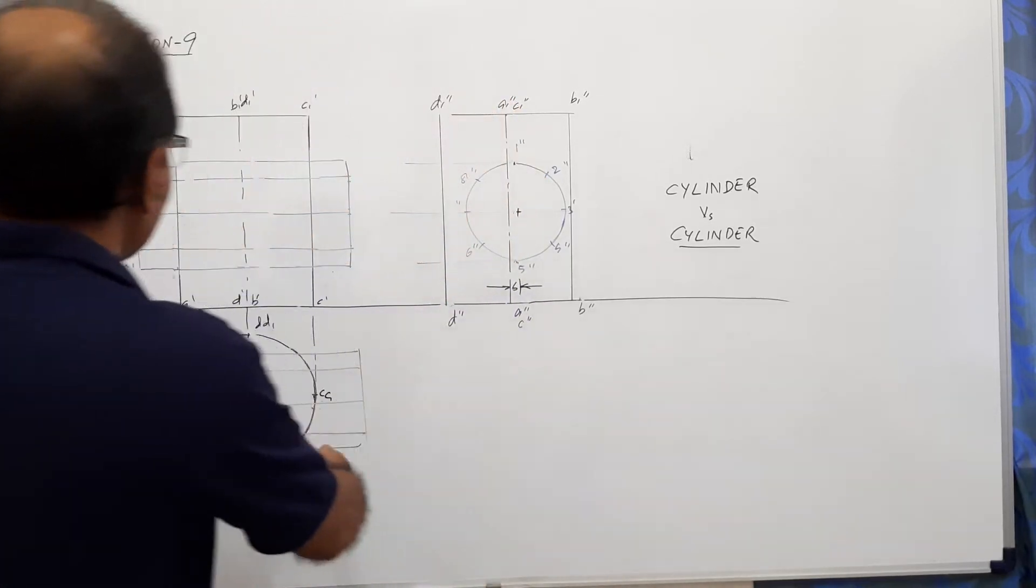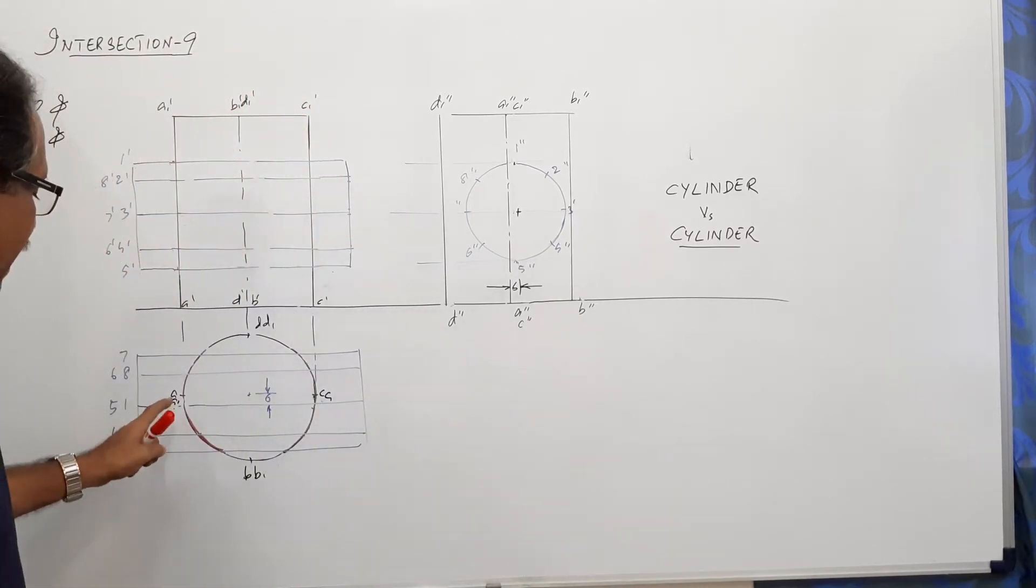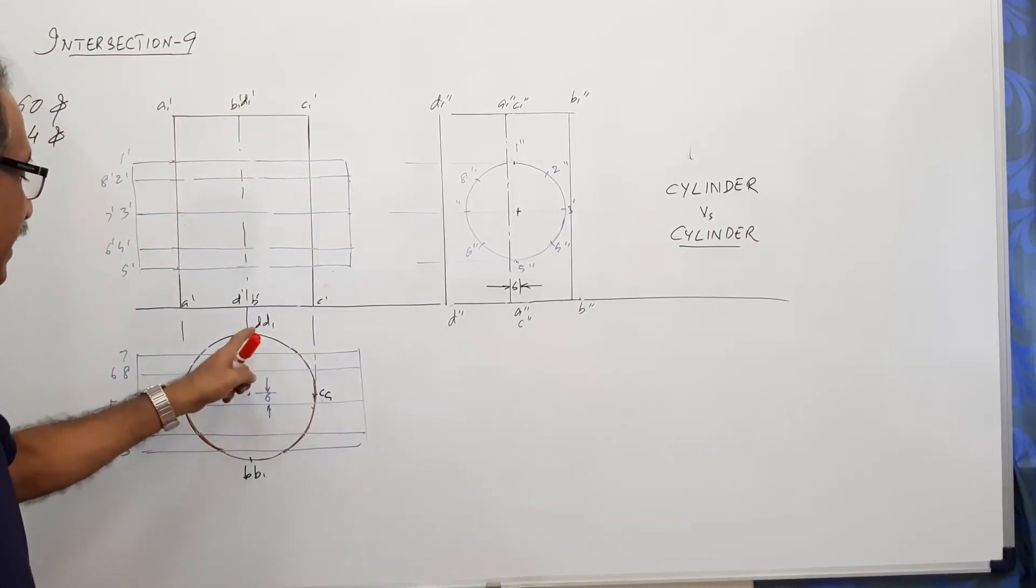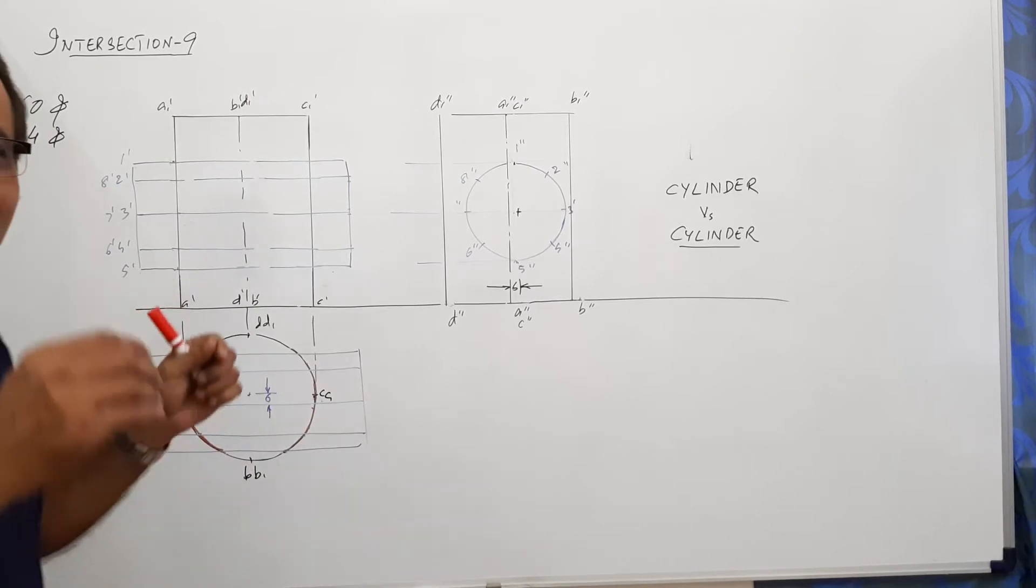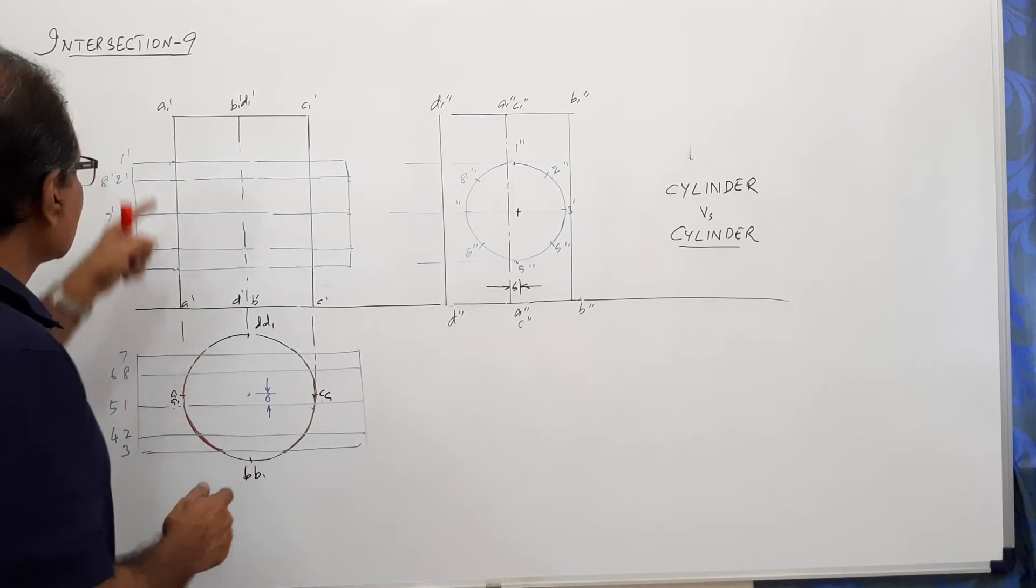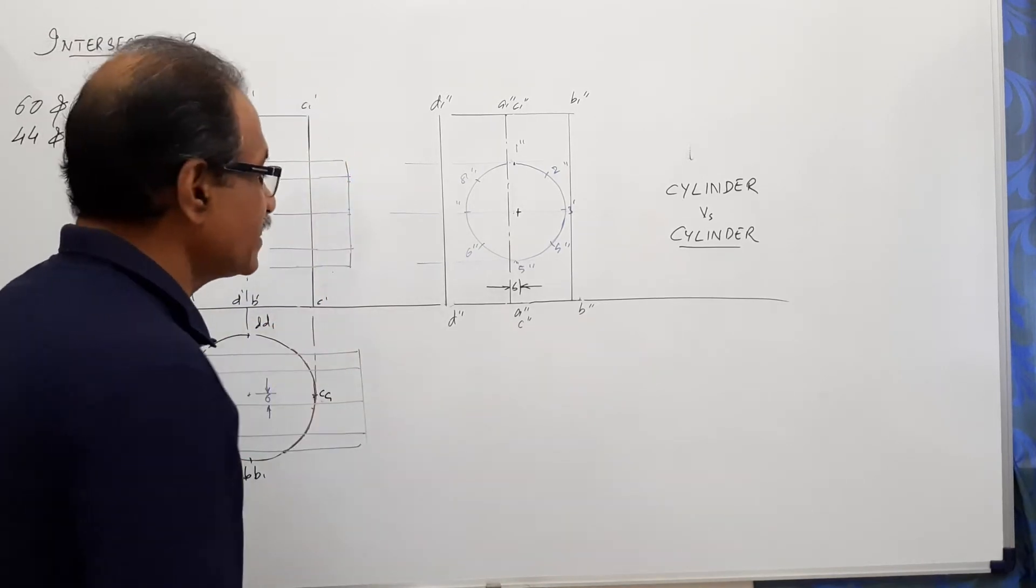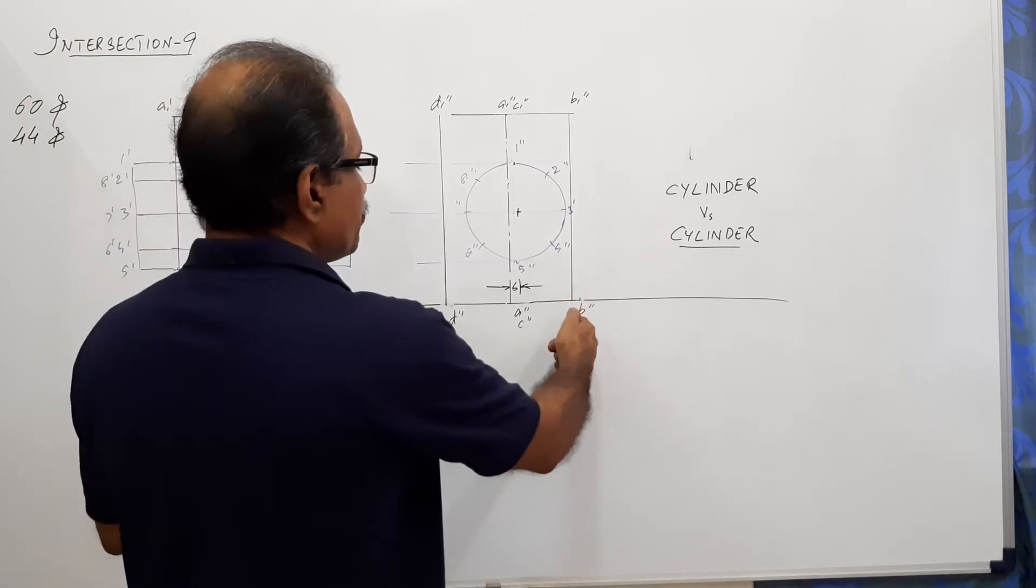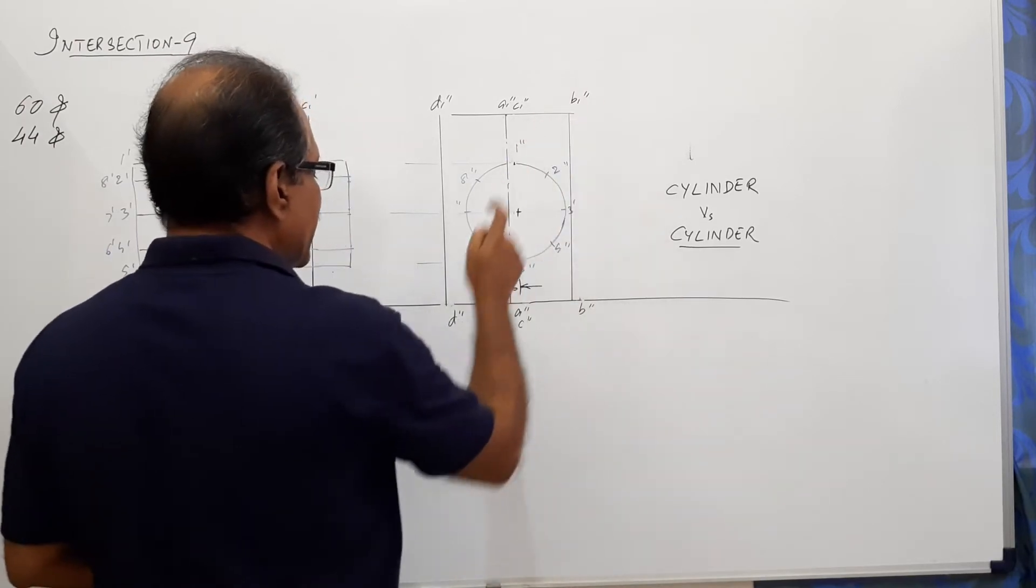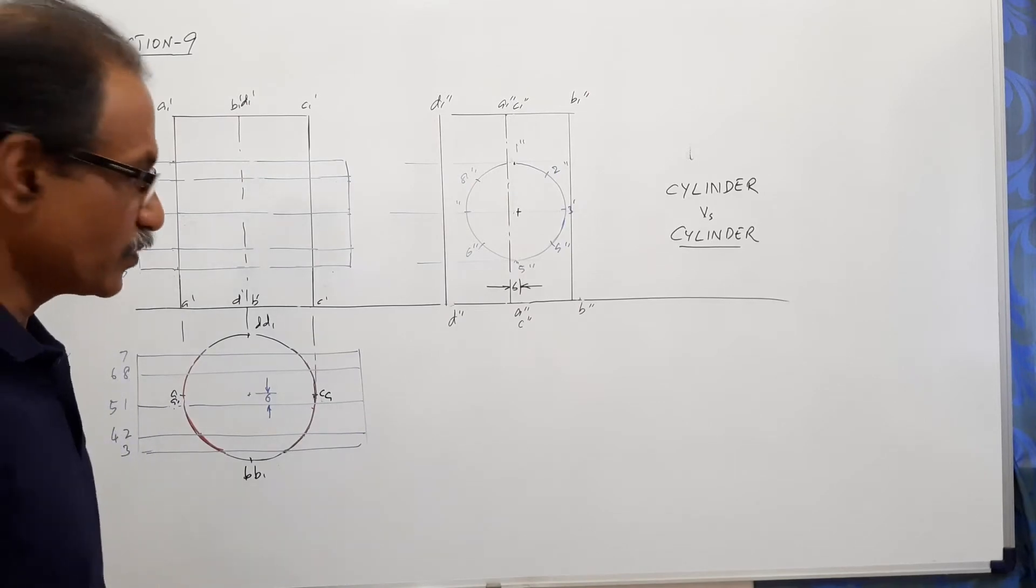Now, I draw the plane, elevation and the end view of the vertical cylinder. A, A1, B, B1, C, C1, D, D1 are the 4 physical boundaries of the cylinder. A dash, A1 dash and C dash, C1 dash become the boundaries in the elevation. B dash, B double dash, D1 double dash and D double dash become the physical boundaries in the end view.